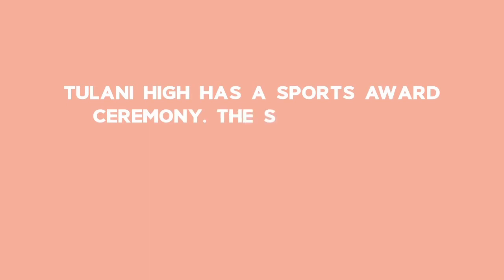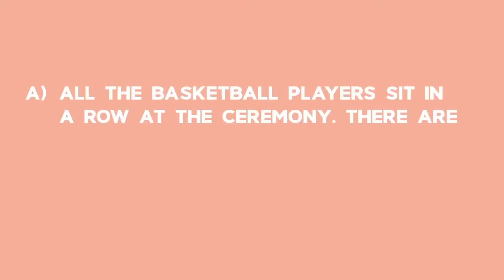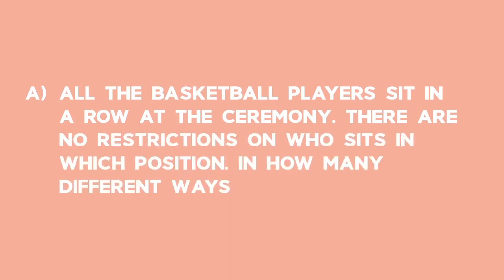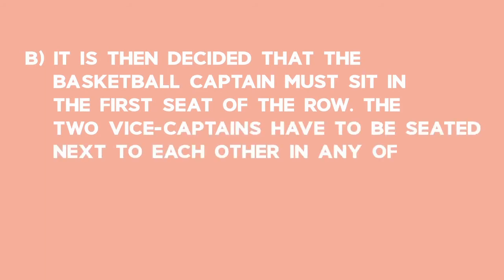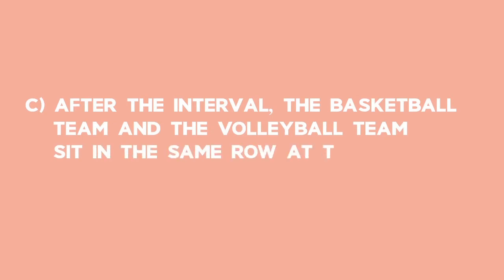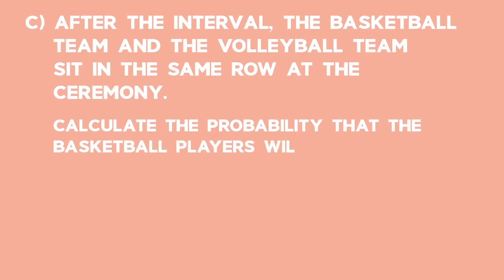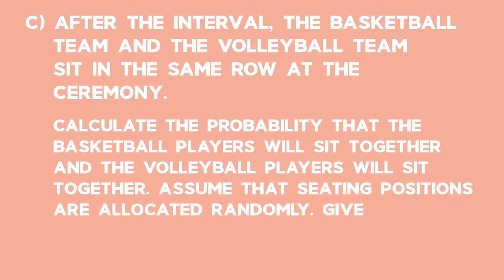Example 2: Seating Arrangements. Turani High has a sports award ceremony. The school has a basketball team of 5 players and a volleyball team of 6 players. A: All the basketball players sit in a row — in how many different ways can they be seated with no restrictions? B: The basketball captain must sit in the first seat, and the two vice-captains must be seated next to each other — in how many ways can the players be seated? C: After the interval, both teams sit in the same row. Calculate the probability that the basketball players sit together and the volleyball players sit together, assuming random seating. Give your answer as a simplified fraction.